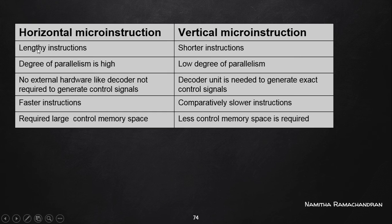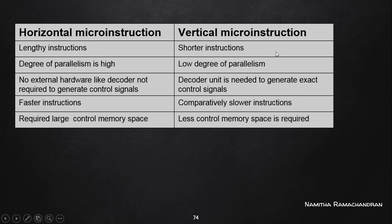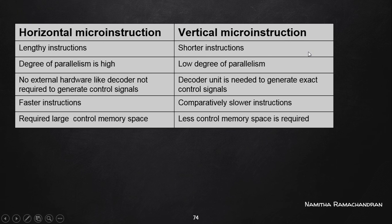Since the size of horizontal micro instructions is large, they require more memory space, meaning we need a larger control memory. But for vertical micro instructions, the instruction size is smaller, so we can implement the control memory using a smaller amount of ROM memory space. These are the basic differences between horizontal and vertical micro instructions. Thank you.